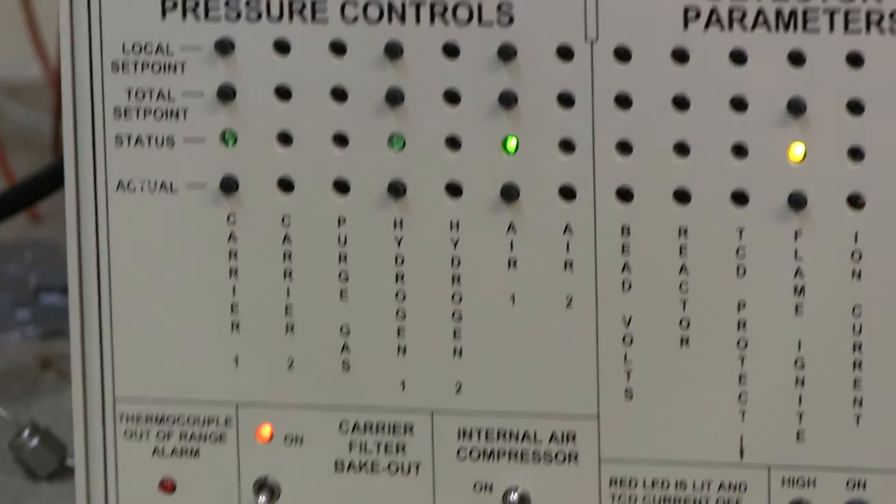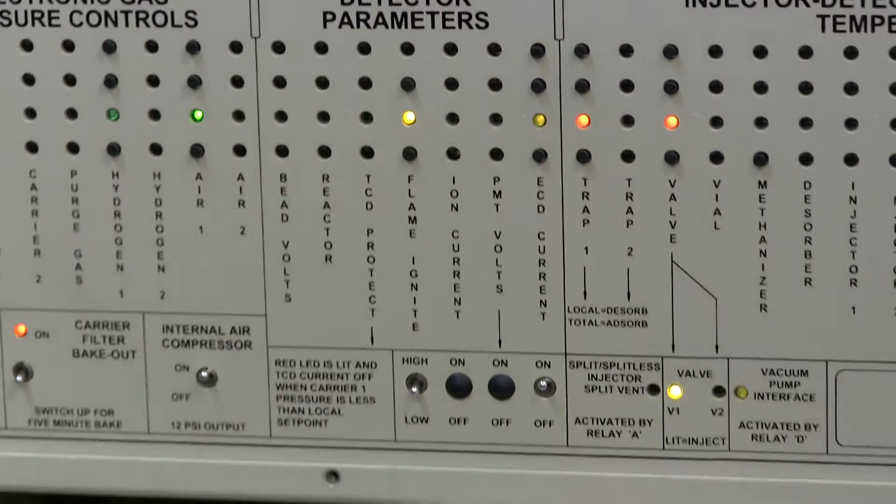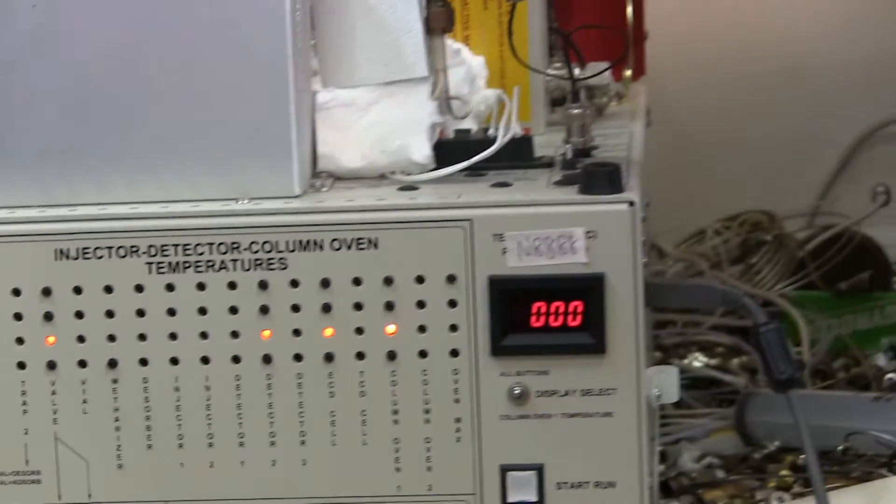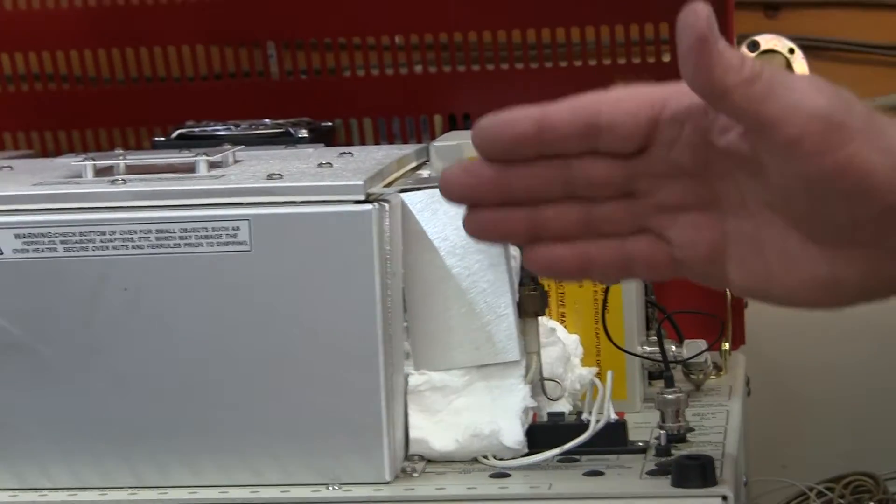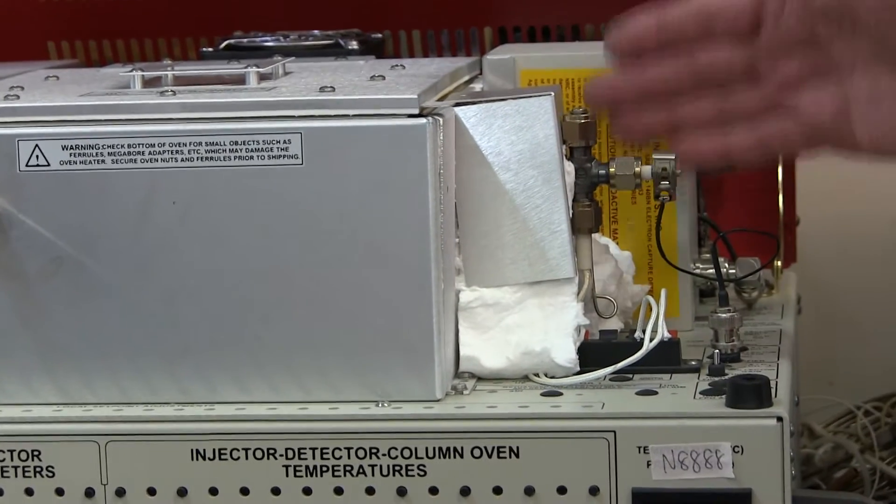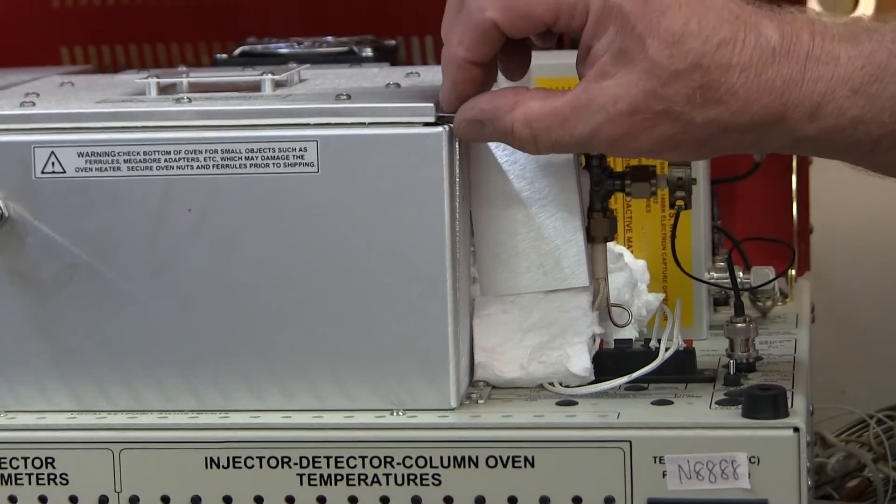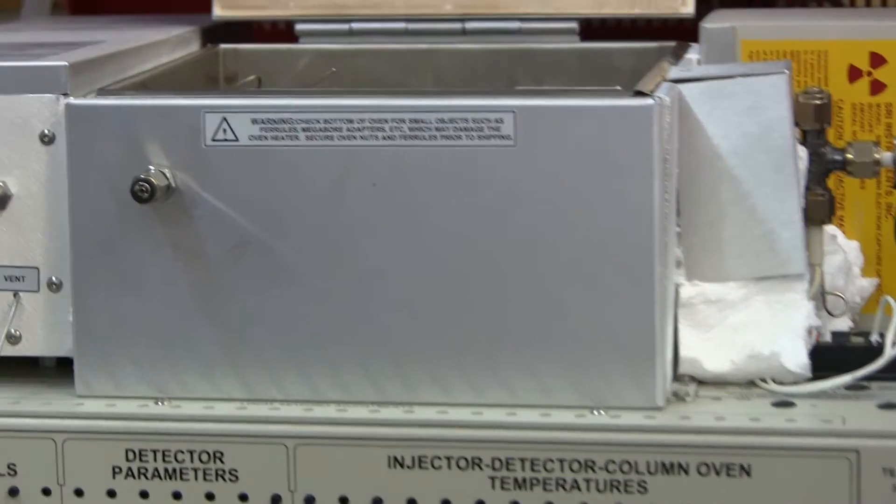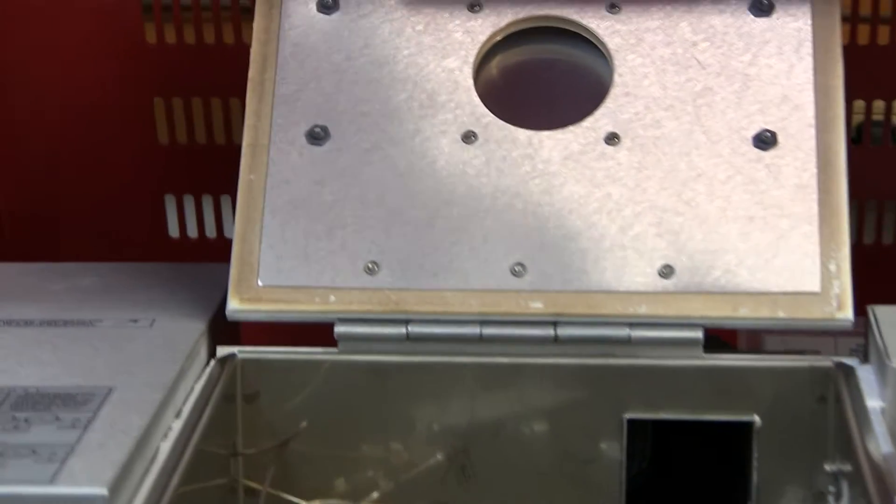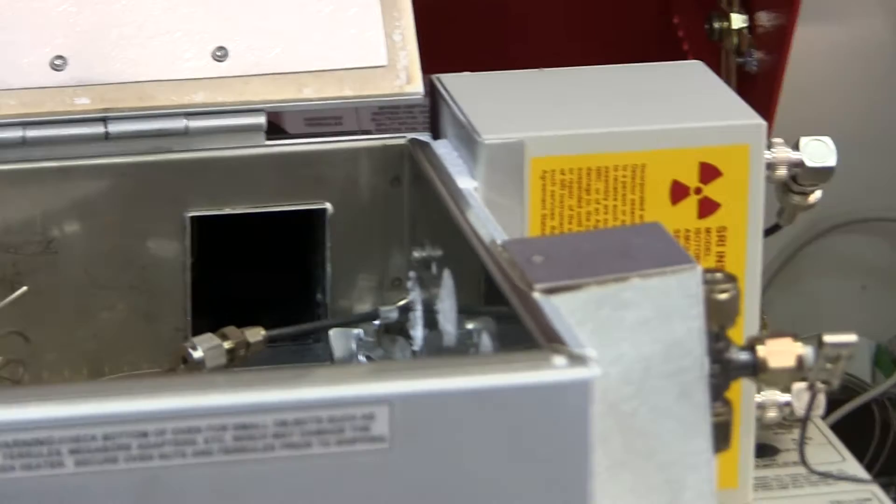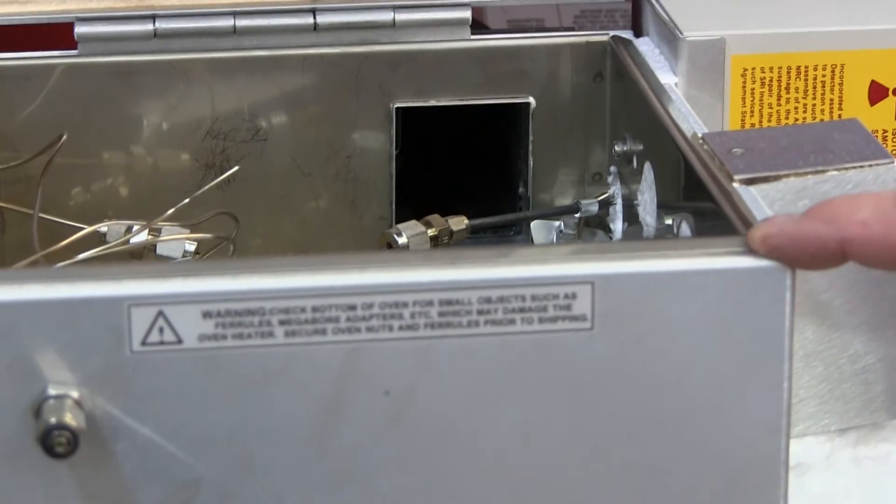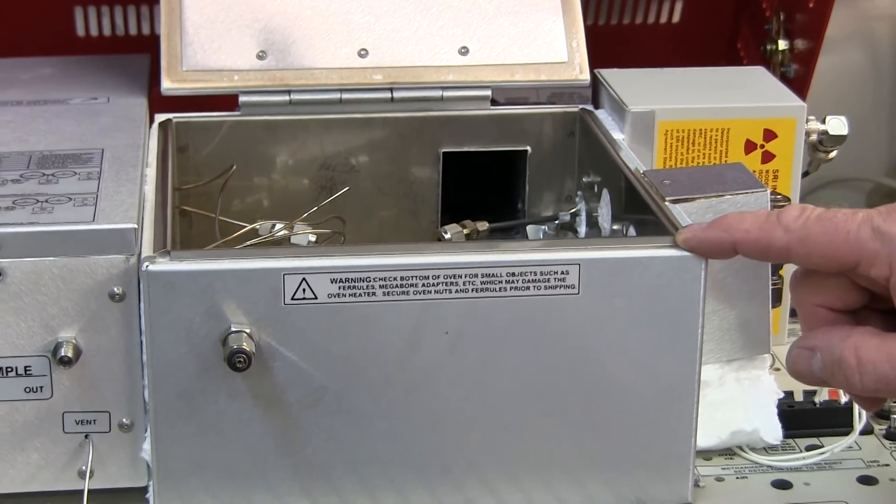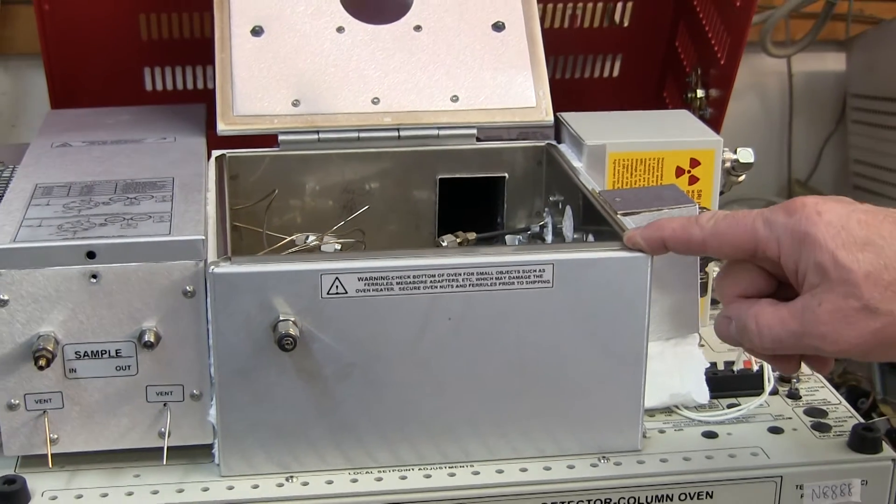So that's the front panel of the GC. Over here on the right of the GC is where we mount the detectors. You can have up to six detectors mounted in these positions along the right-hand side of the column oven.